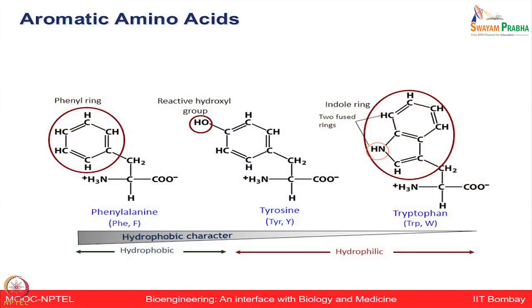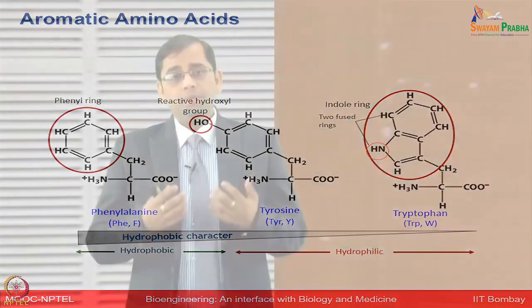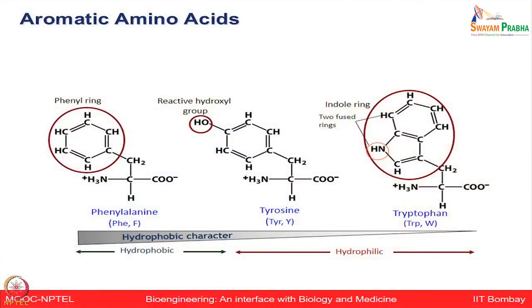Now let us focus on aromatic amino acids: phenylalanine, tyrosine, and tryptophan. Phenylalanine has a phenyl ring. Tyrosine has a reactive hydroxyl group. Tryptophan has an indole ring, which consists of two fused rings with an NH group. These aromatic properties give phenylalanine hydrophobic characteristics, whereas tyrosine and tryptophan are more hydrophilic due to the presence of their OH and NH groups.